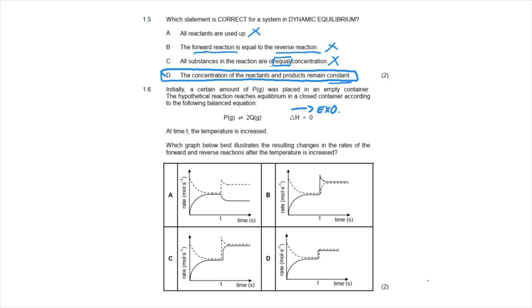All the graphs start the same way: the forward reaction is represented by the dotted line, starting at a high rate and slowly decreasing until the rates of both forward and reverse reactions are constant — that is equilibrium, up until time T.